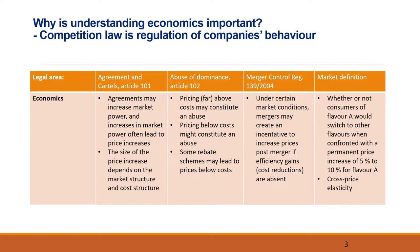Let's take a look at some examples. 1. Agreements and Cartels under Article 101. Under Article 101, the market structures are essential for the application of the provision, as only an anti-competitive agreement infringes Article 101. Part of the assessment will focus on competitors' market positions, market power, barriers to entry, etc.